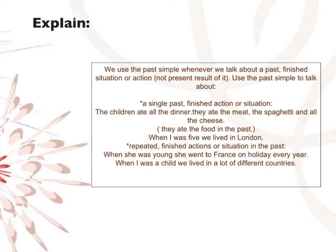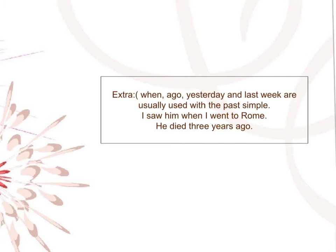When I was five, we lived in London. Repeated finished actions or situations in the past — for example, when she was young, she went to France on holiday every year. When I was a child, we lived in a lot of different countries. Time expressions such as when, ago, yesterday, and last week are usually used with the past simple.